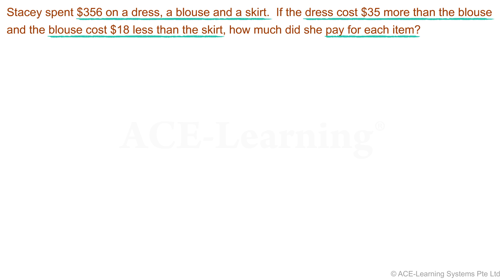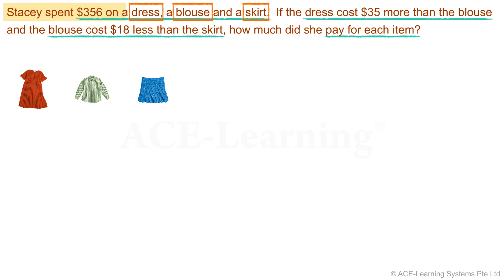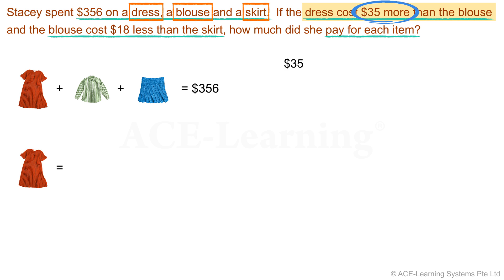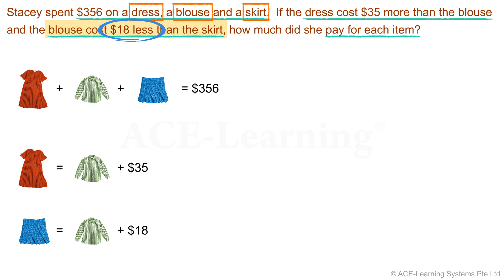Let us draw a diagram to help us understand the problem. What are the items involved? There were three items bought: a dress, a blouse, and a skirt. The total cost of these three items was $356. The dress cost $35 more than the blouse. The blouse cost $18 less than the skirt, which also means the skirt cost $18 more than the blouse. We are to find the cost of each item.